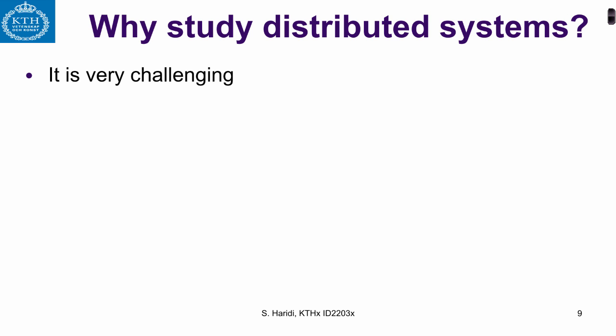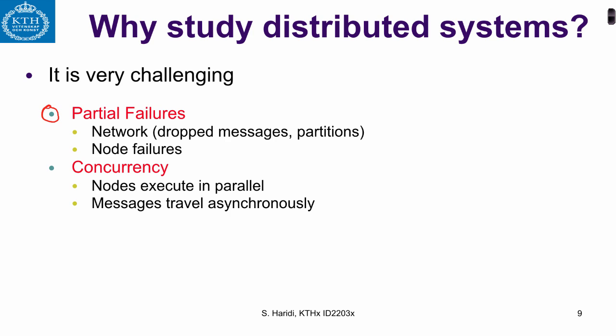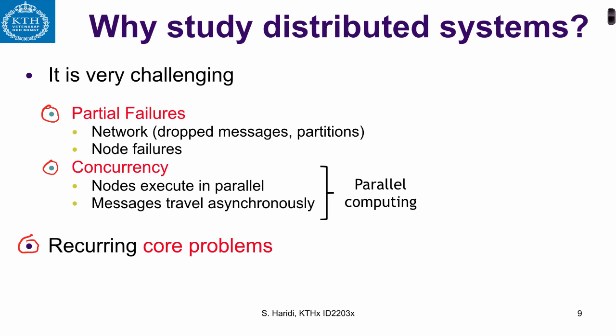Distributed systems are also challenging. Why? Because in distributed systems we encounter partial failures, where the network can drop messages and nodes can fail. Also, these systems are concurrent — nodes execute in parallel and messages travel the system asynchronously. Concurrency by itself is the domain of parallel computing, but distributed systems cover both partial failure and concurrency. When we study distributed systems, we encounter a series of recurring problems. Some are easy to solve, some are hard, and some are impossible to solve — it all depends on our assumptions about what kind of system we are talking about. That will be our topic in the next unit.